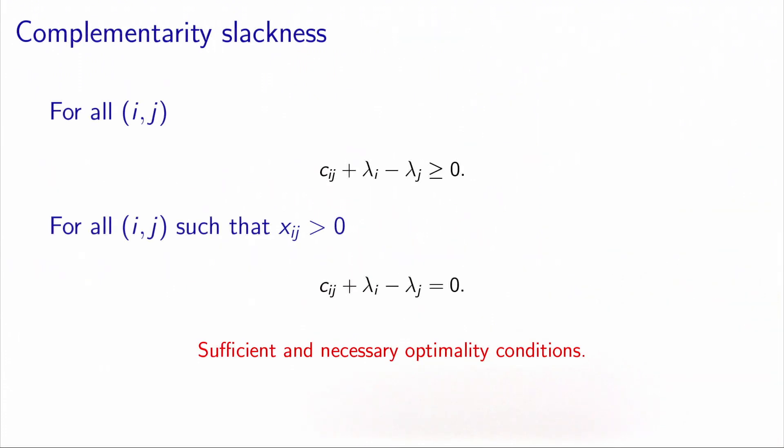This is interesting because we have very simple optimality conditions in this case. We need that this inequality be verified for each arc in the network. And we have that this equality condition has to be verified for each arc in the network that is carrying some flow. These are called the complementarity slackness conditions. For all arcs, cij plus lambda i minus lambda j must be non-negative. And for all arcs carrying flows, so that the flow vector is strictly positive, this must be verified with equality. And it can be shown that these conditions are sufficient and necessary optimality conditions for the transshipment problem.